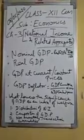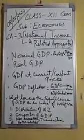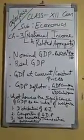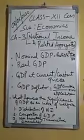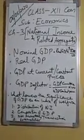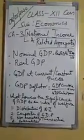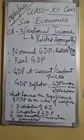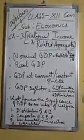Second, GDP at constant prices refers to the market value of final goods and services produced within the domestic territory of a country during an accounting year, as estimated using the base year prices. It increases only when there is an increase in the quantum of output in the economy.